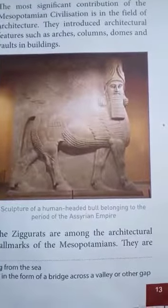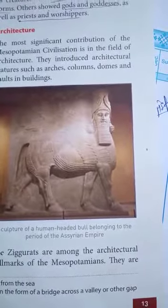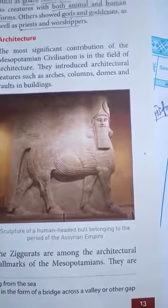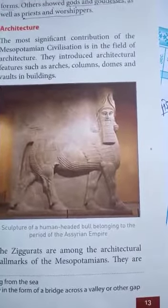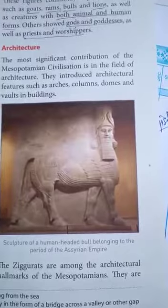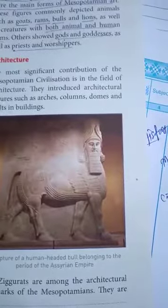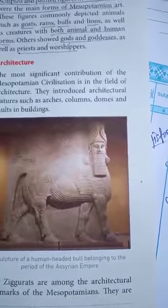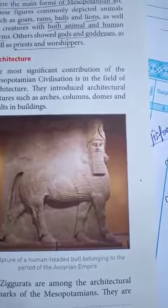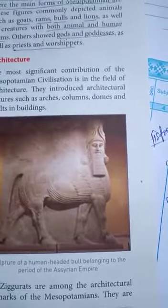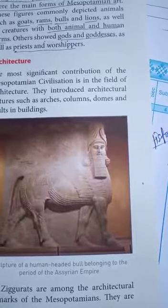Art is nothing but the skillful creative activity which is mainly done as painted figures in stones or sculptures. Sculpted and painted figures on stone and clay were the main forms of Mesopotamian art. These figures are known as painted figures.